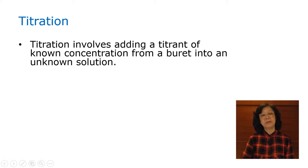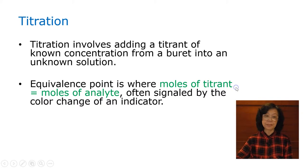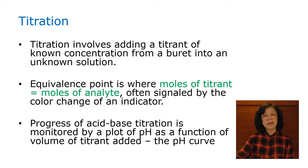Titration involves adding a titrant of known concentration from a buret into an unknown concentration in a flask. The equivalence point is calculated stoichiometrically where moles of the titrant equal the moles of analyte and is often signaled by the color change of an indicator, which we call the endpoint. The progress of the titration is monitored carefully by a plot of pH as a function of volume of titrant added, which we refer to as the pH curve.